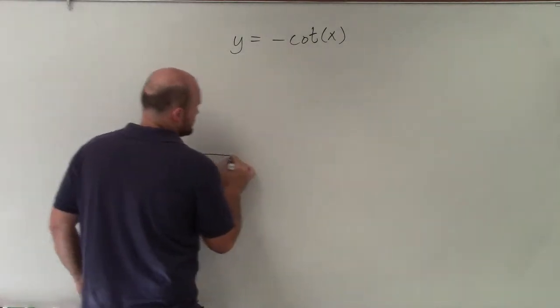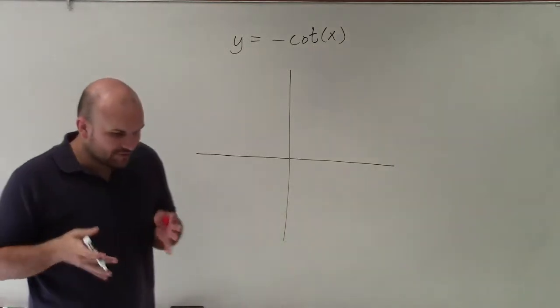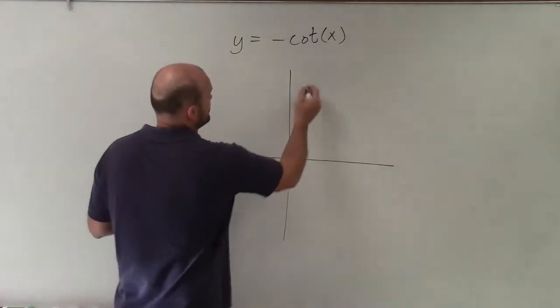So when we're looking at the cotangent function, there's a couple differences we need to make sure we remember. First of all, I'm just going to graph y equals cotangent of x.